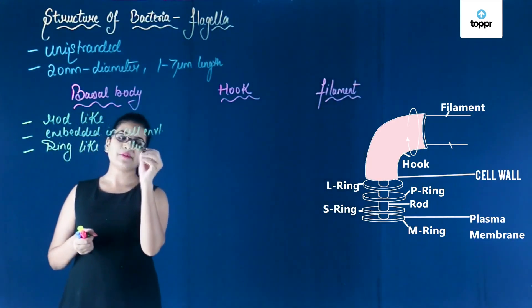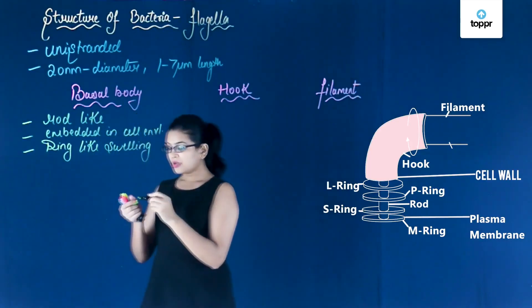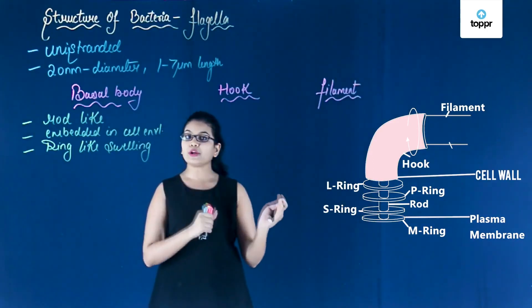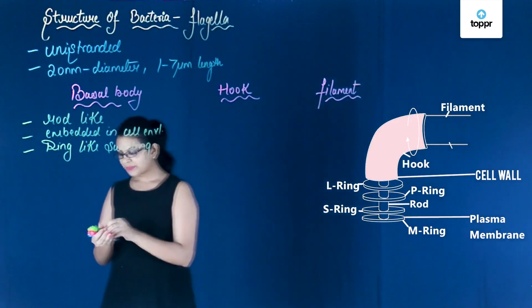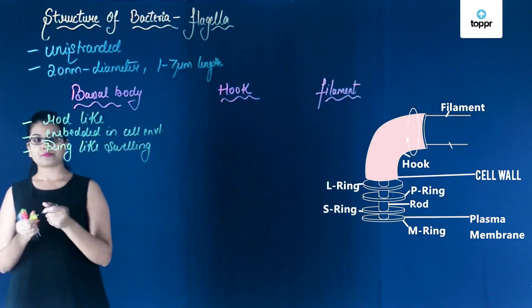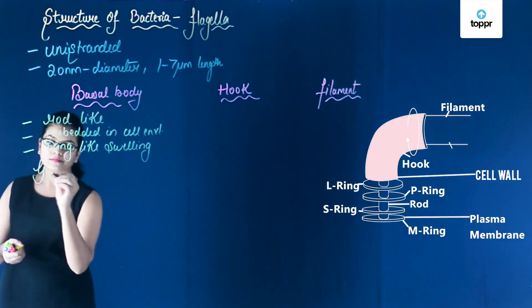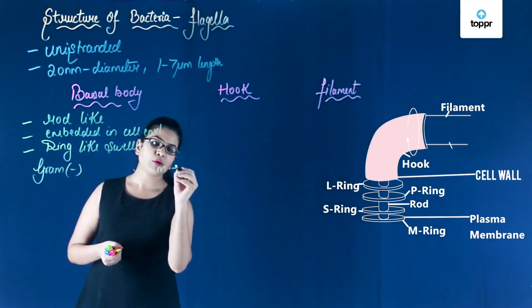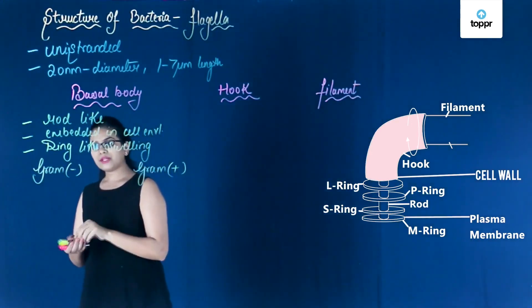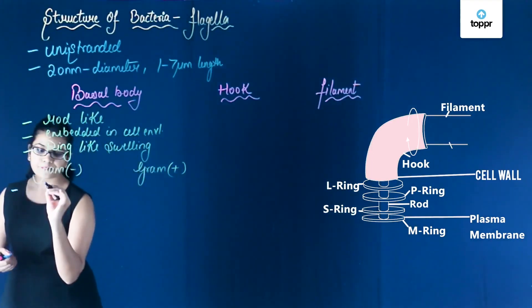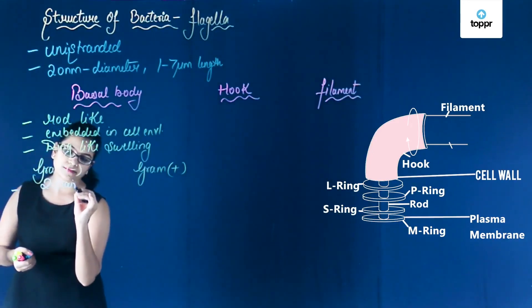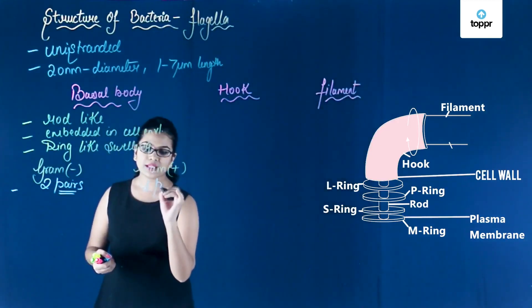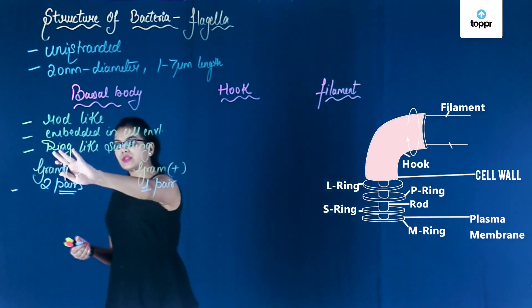These ring-like swellings play a very important role in understanding the bacteria, because based on the number of rings, we can identify if a bacteria is gram positive or gram negative. When you look at the gram negative bacteria, you will find that there are two pairs of rings. But in the case of gram positive, there is only one pair of rings.